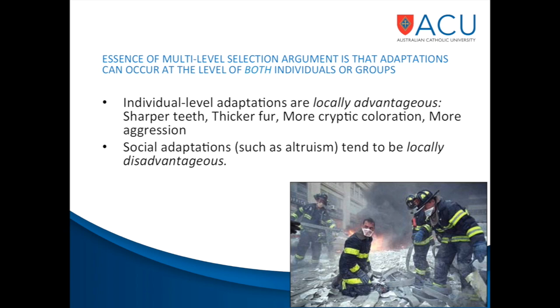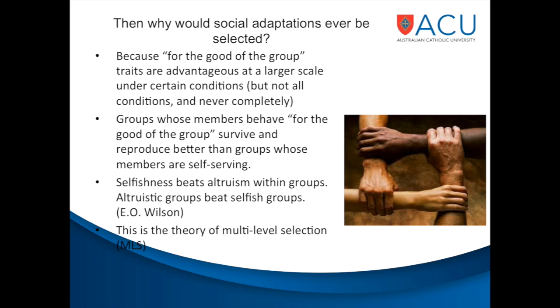At the collective level, social adaptations such as altruism and cooperation can be locally disadvantageous. As an example, consider 9/11: 2,297 people died, and of that, 18.5% — nearly 20% — voluntarily died, including volunteer firefighters and 414 police officers. So we have a pretty good track record of 20% volunteering to sacrifice their lives for the sake of others. Why should social adaptations ever be selected then, if they're locally disadvantageous? Because for the good of the group, traits are advantageous at a larger scale under certain conditions. Groups whose members behave for the good of the group survive and reproduce better than groups whose members are self-serving. As E.O. Wilson put it: selfishness beats altruism within groups, but altruistic groups beat selfish groups. That's the theory of multi-level selection.